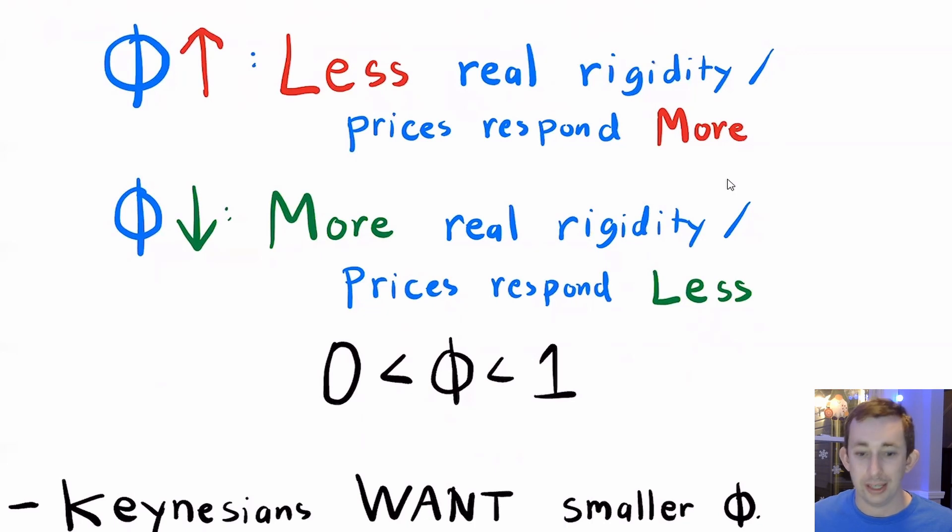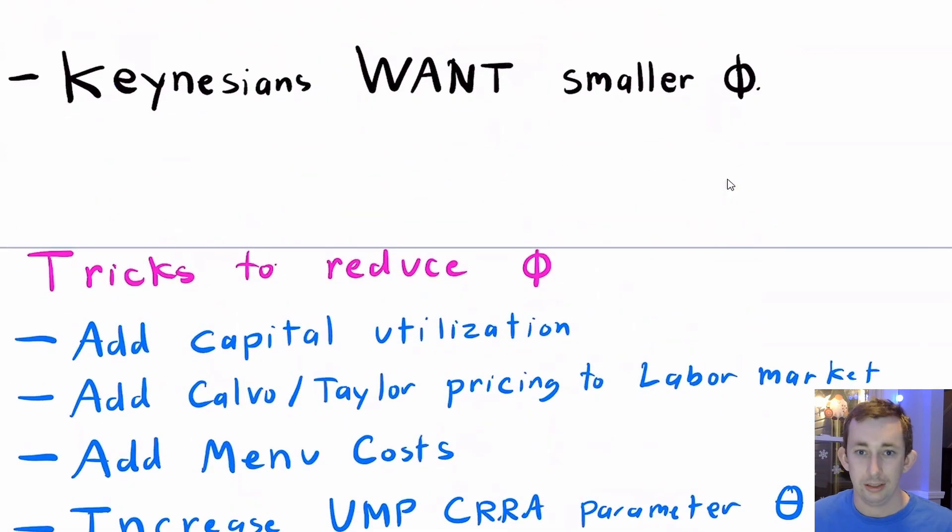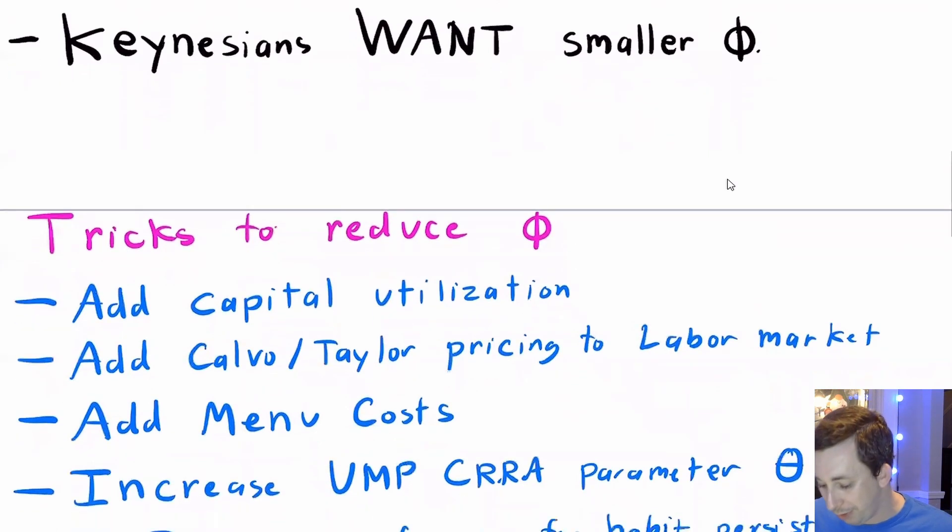And if it was zero, prices would never ever be allowed to change. Now, if you're Keynesian, you want a smaller real rigidity parameter, because you want to demonstrate why prices are sticky in an economy and what that leads to in terms of longer term economic outlook and effects.